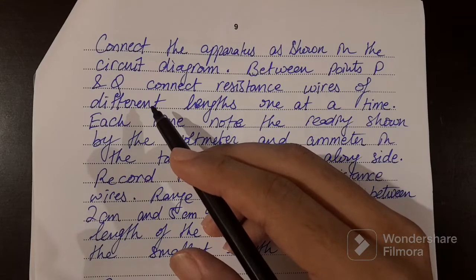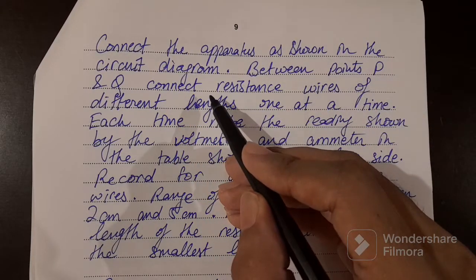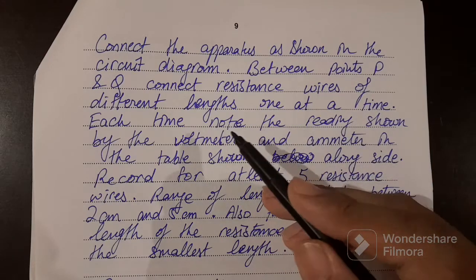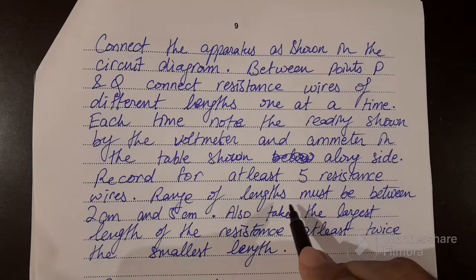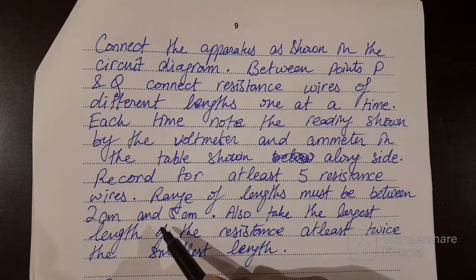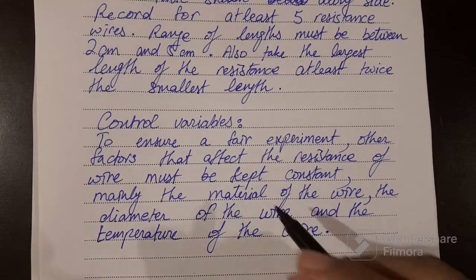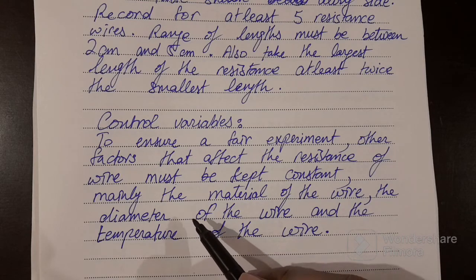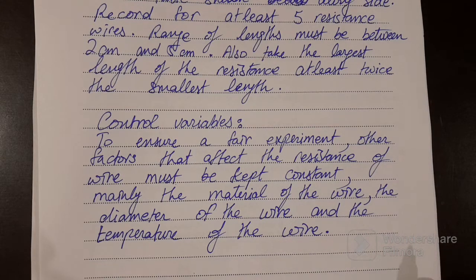To carry out the experiment: connect apparatus as shown in the circuit diagram. Connect resistance wires of different lengths one at a time, recording voltmeter and ammeter readings in the table each time. Record at least five wires; lengths should range from approximately 20 cm to 50 cm, with the largest length at least twice the smallest. Control variables: material of the wire, diameter of the wire, and temperature of the wire must all be kept constant.